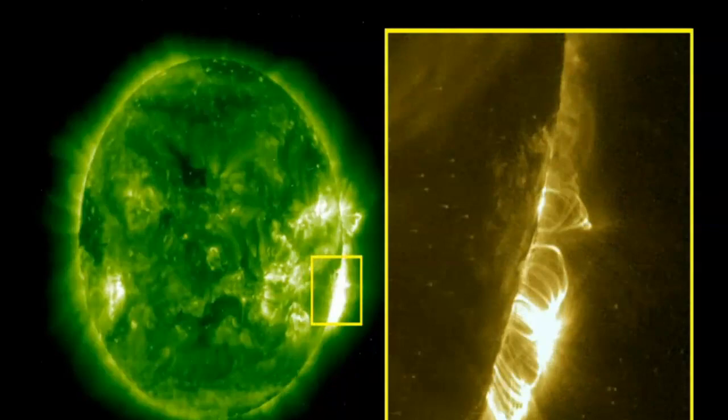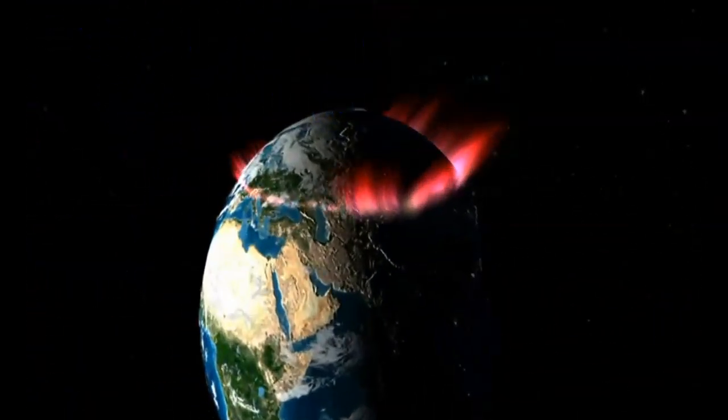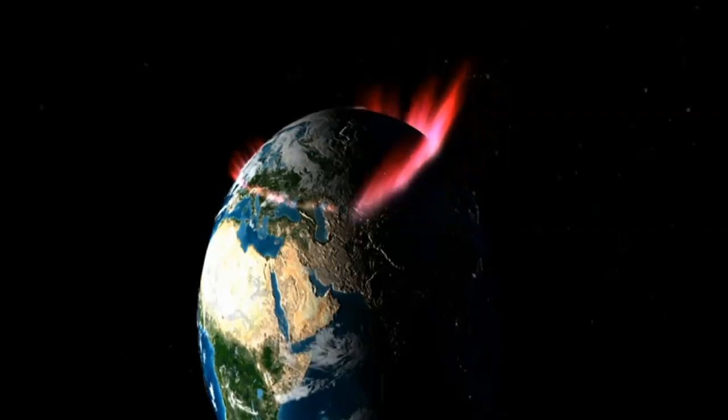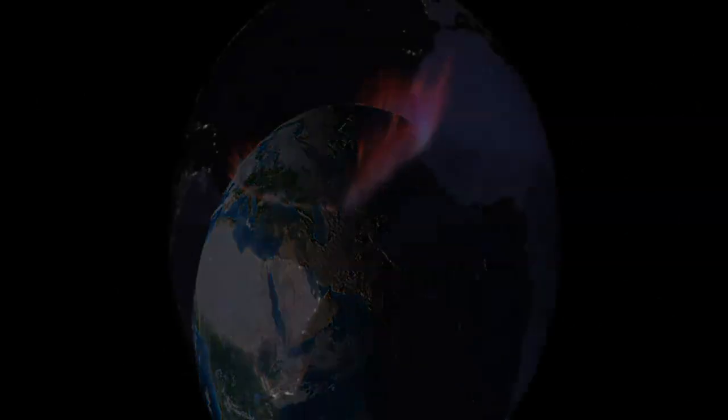A powerful X-class flare like that can create long-lasting radiation storms which can harm satellites and even give airline passengers flying near the poles small radiation doses. X-flares also have the potential to create global transmission problems and worldwide blackouts.